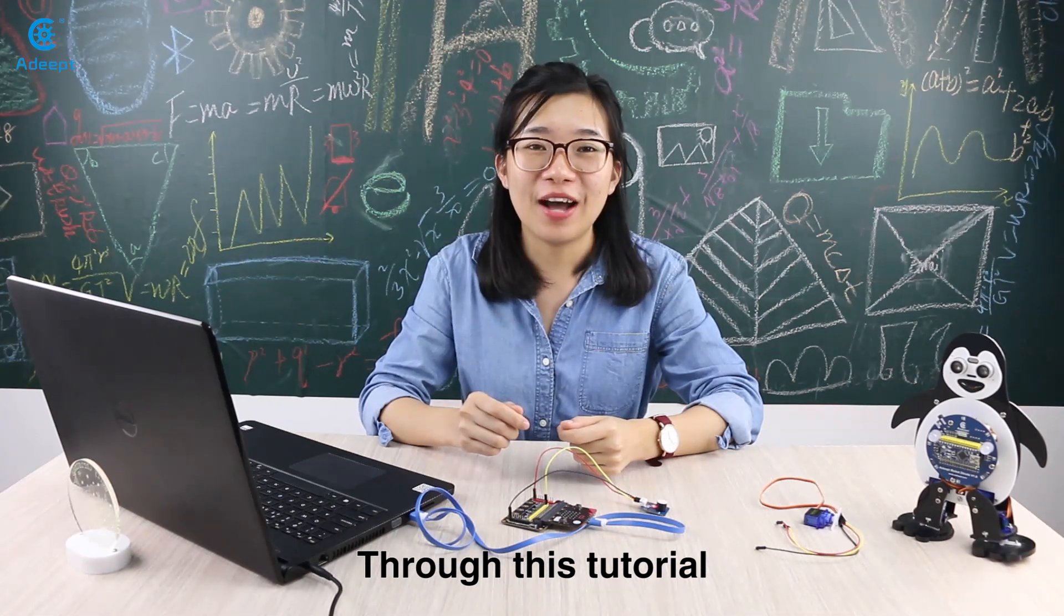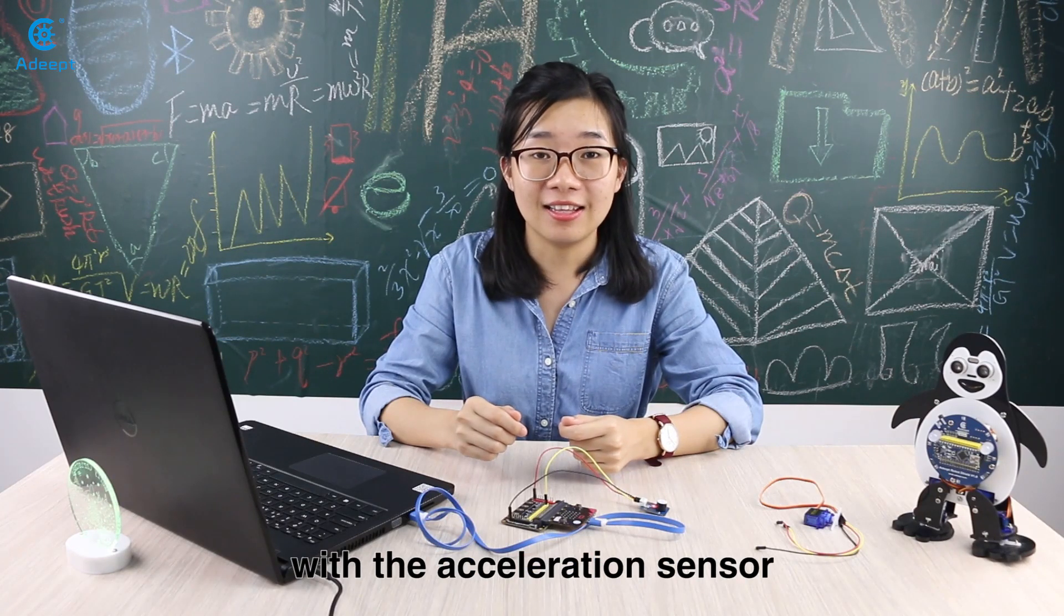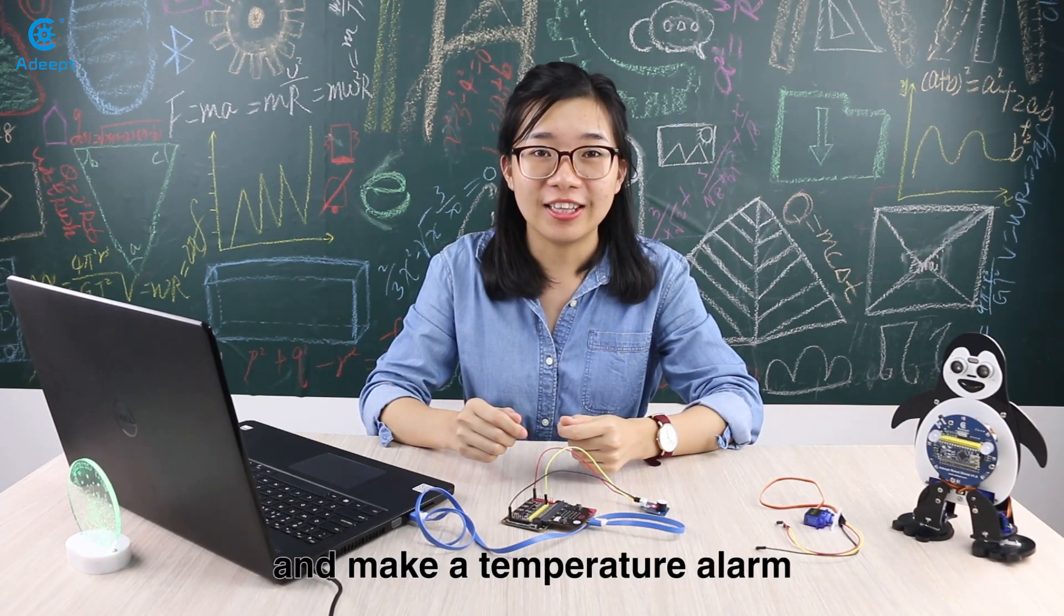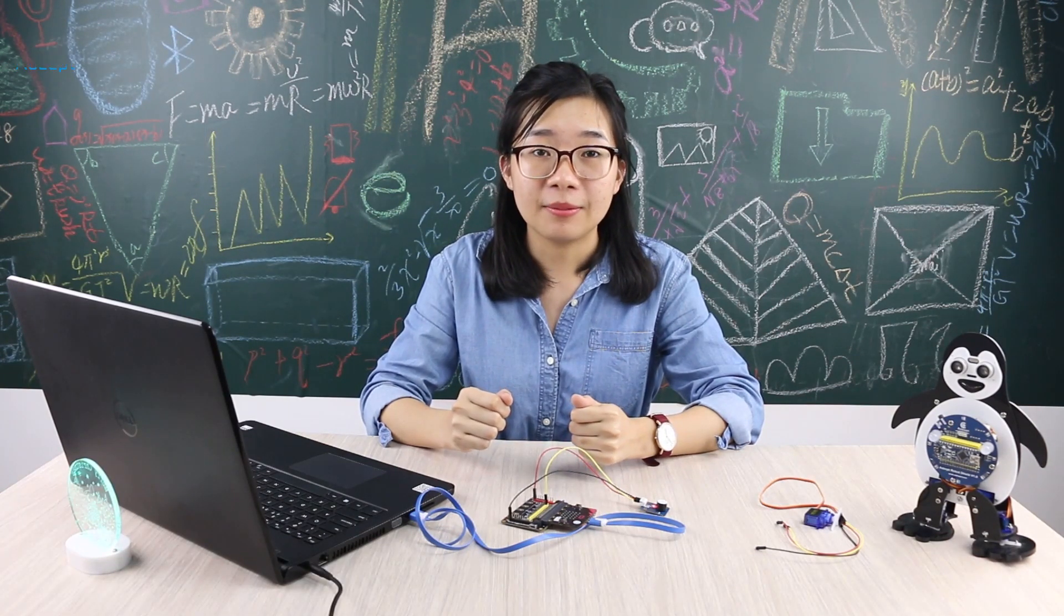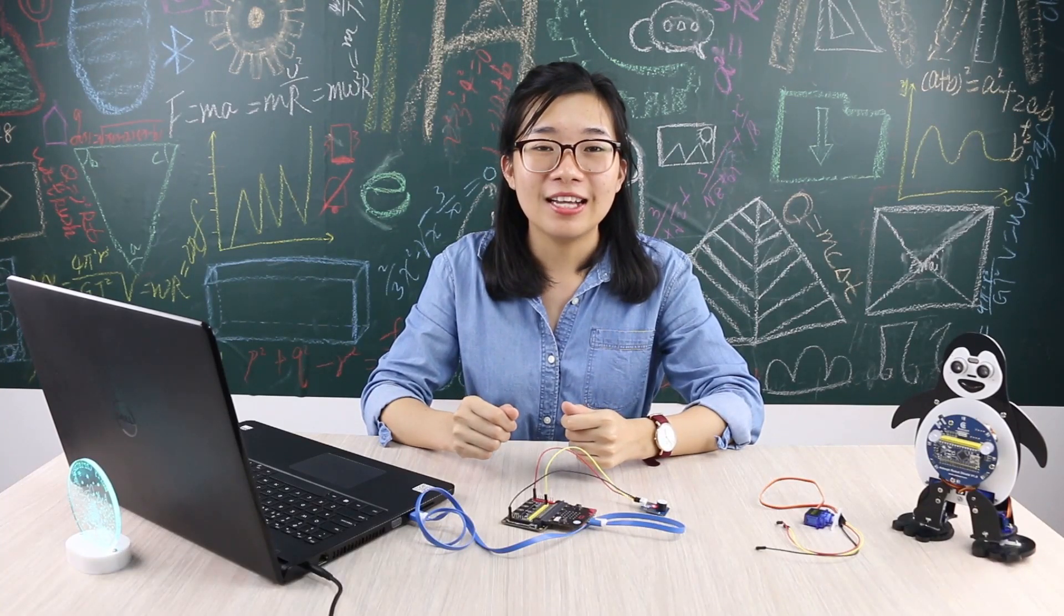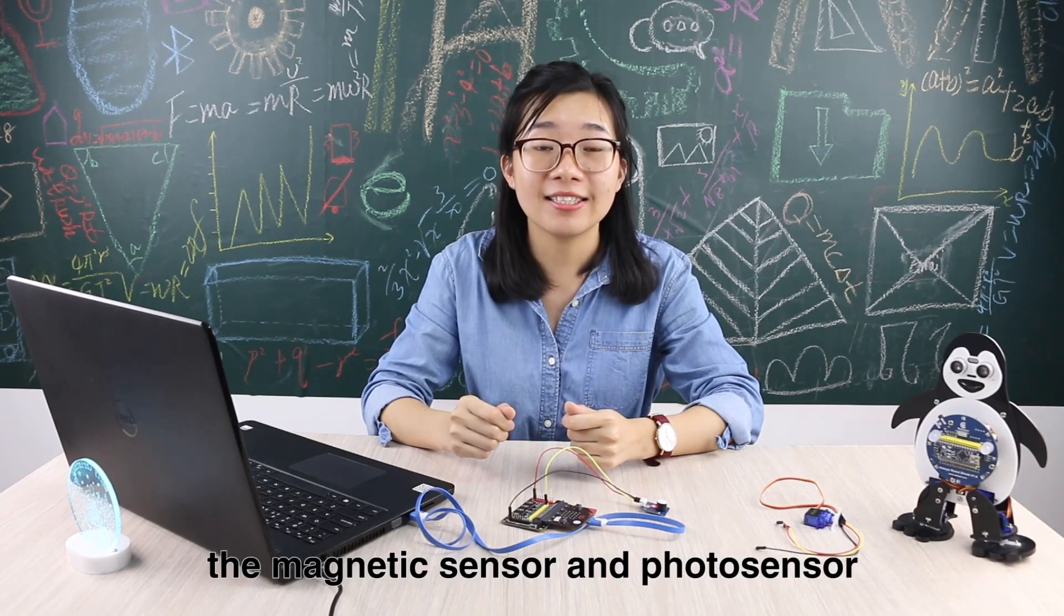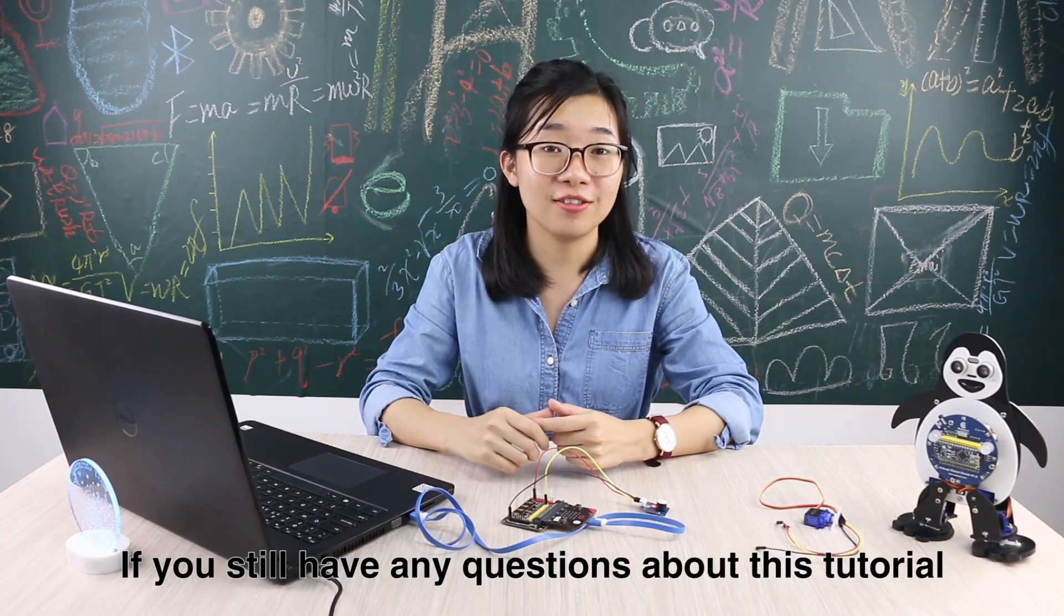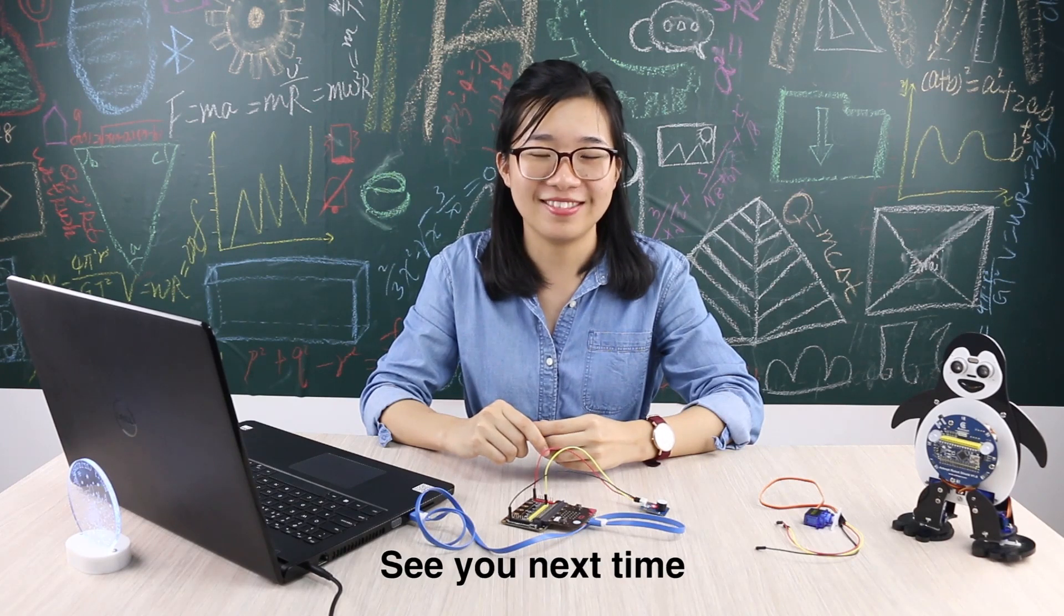Through this tutorial I believe you have known how to control the servo on the micro:bit with the acceleration sensor and make a temperature alarm with the temperature sensor. I hope you can make more interesting experiments based on this tutorial. Next time we're going to talk about the magnetic sensor and the photo sensor. If you still have any questions about this tutorial, post to our forum, we will reply to you soon. See you next time.